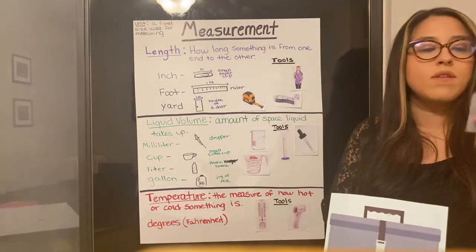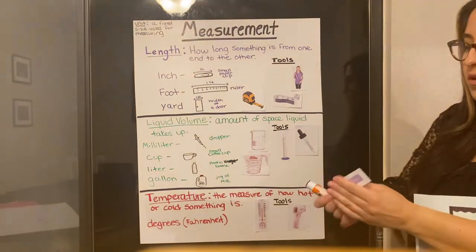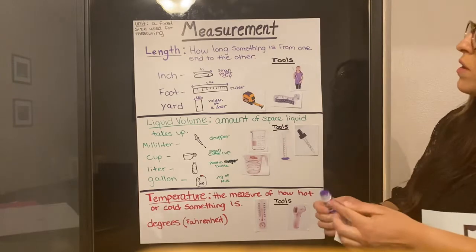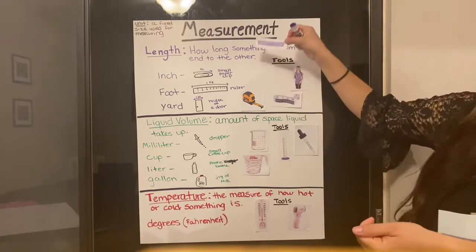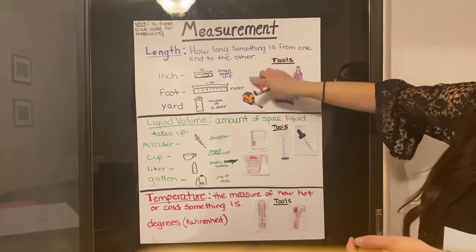We have a ruler, a foot ruler. So we know we can use a ruler to measure length. Anything that is one foot or less, we can use a ruler for.